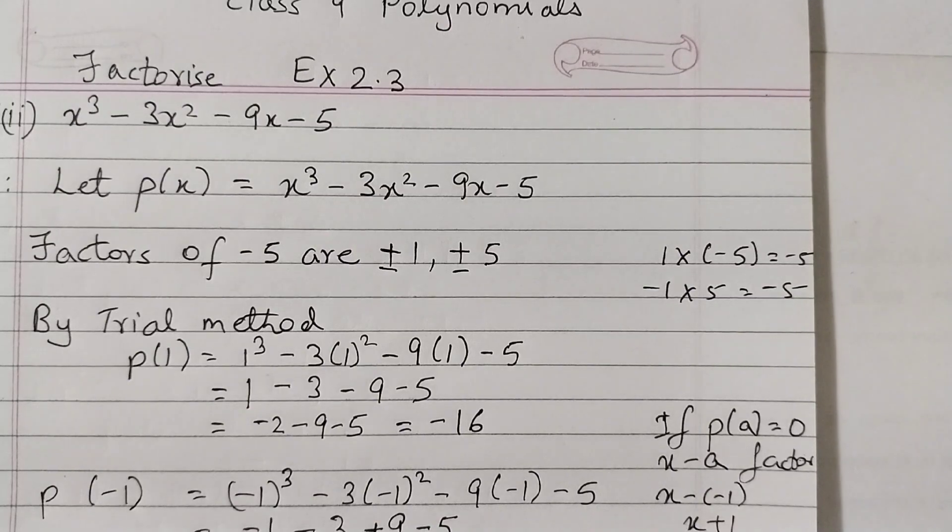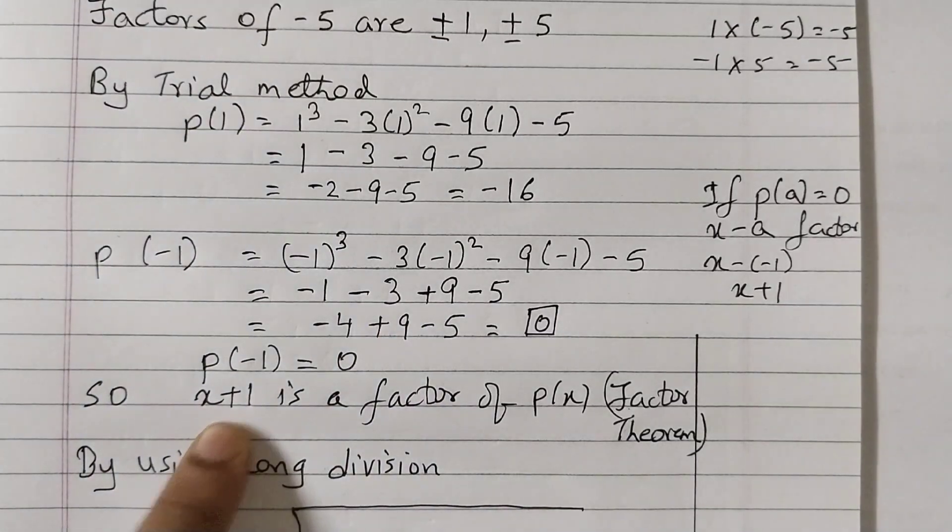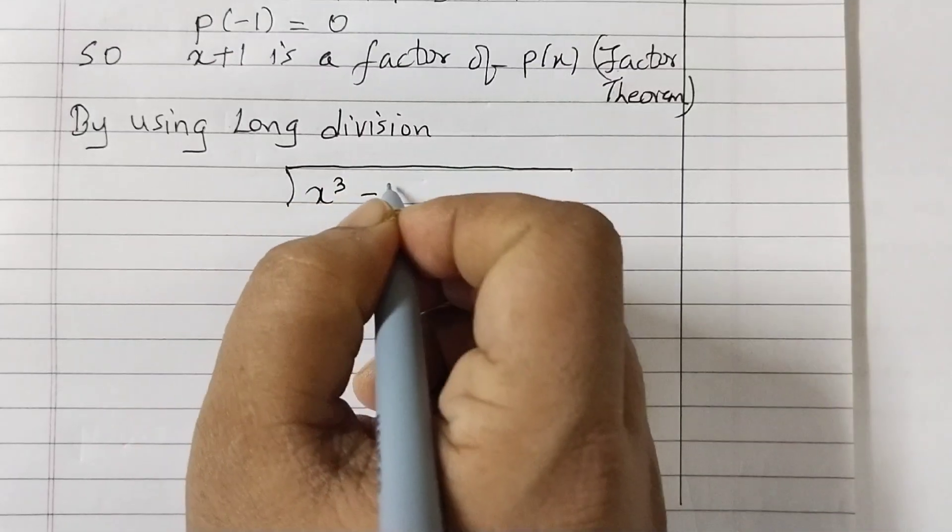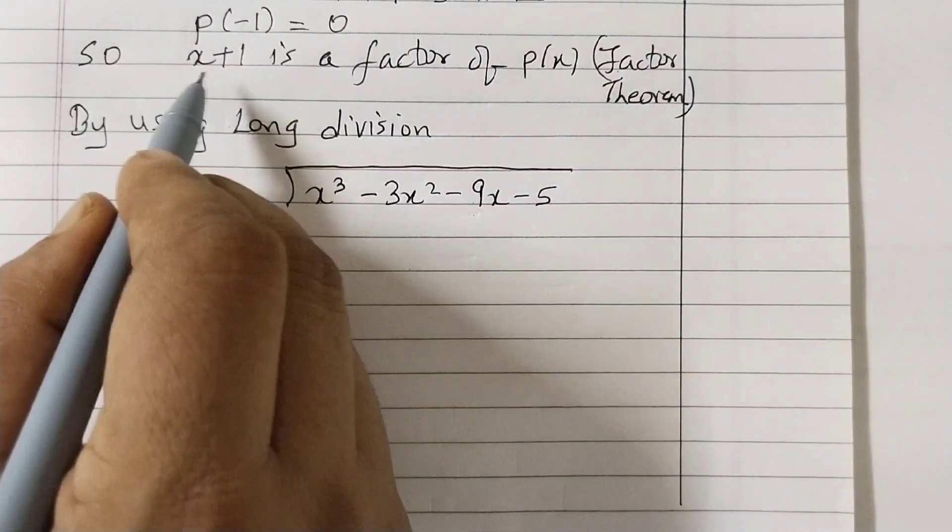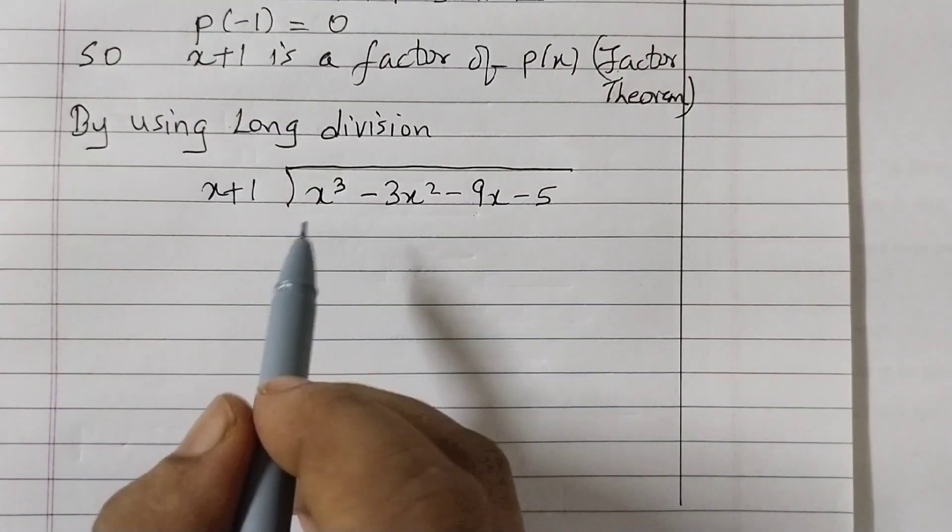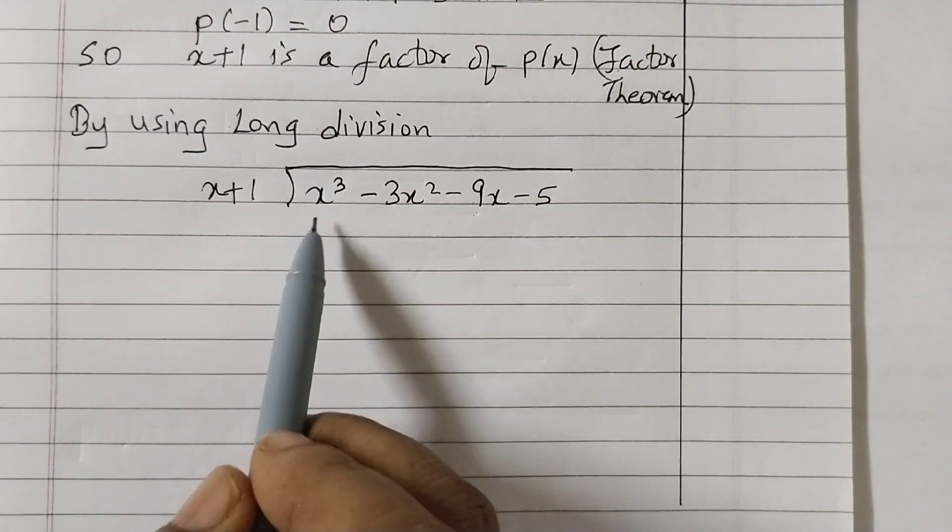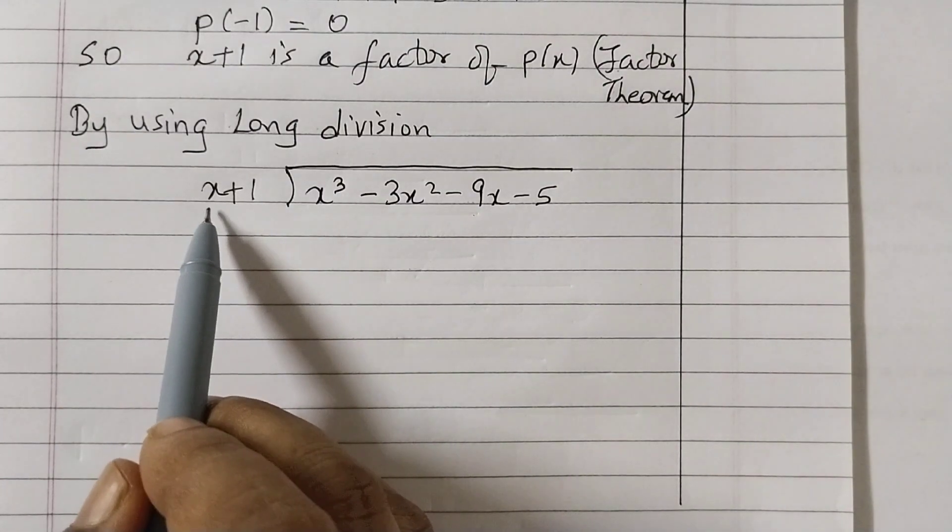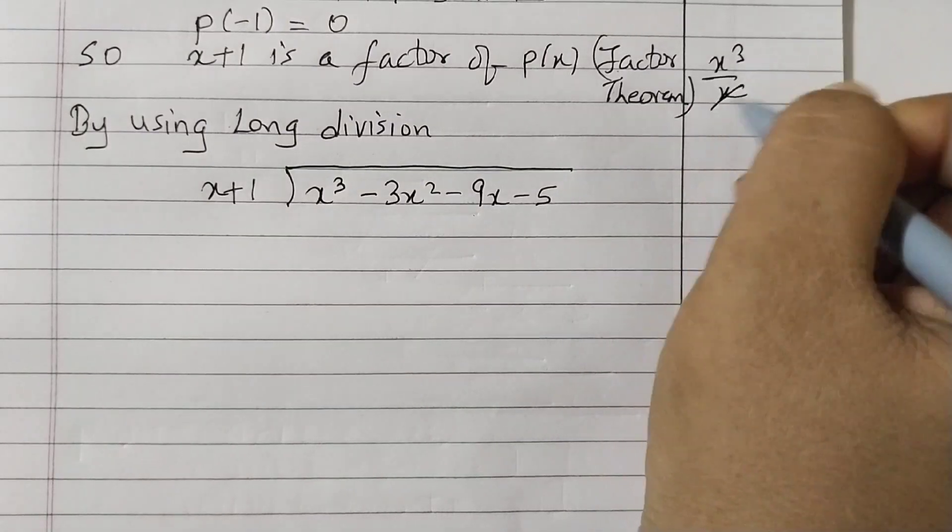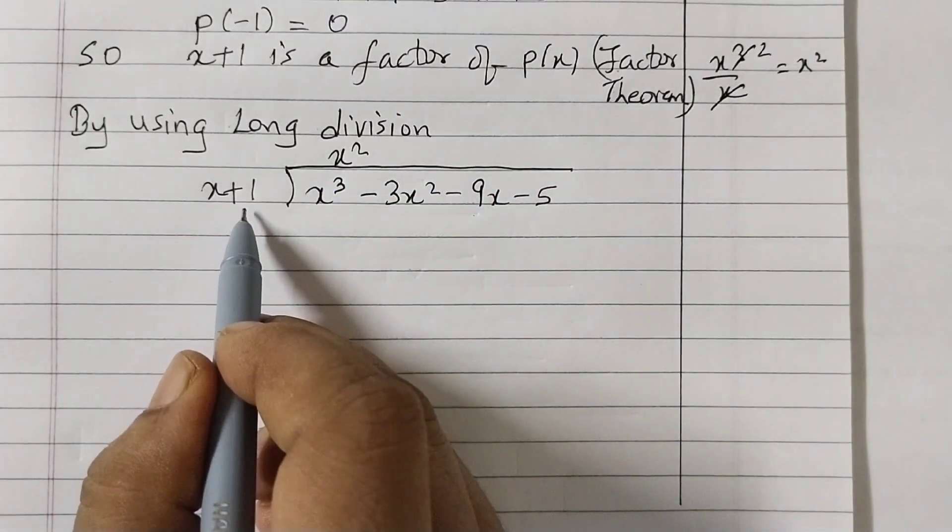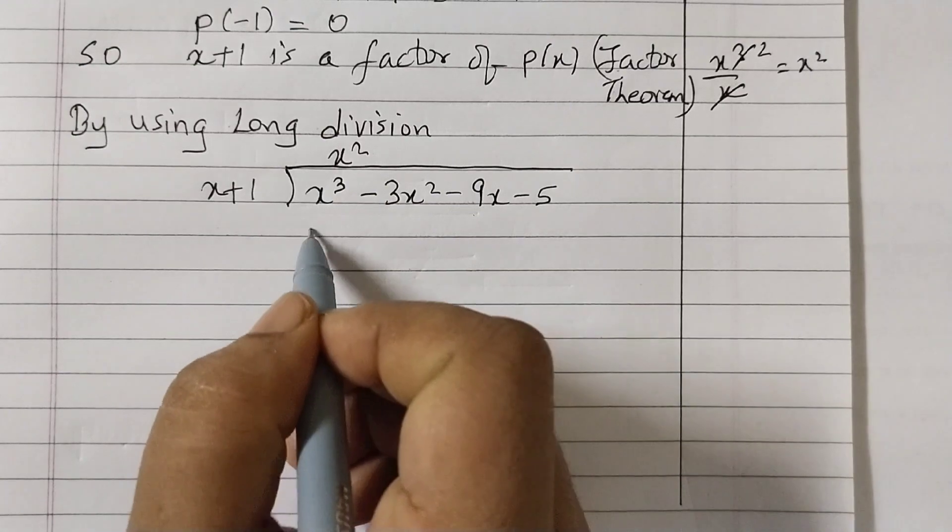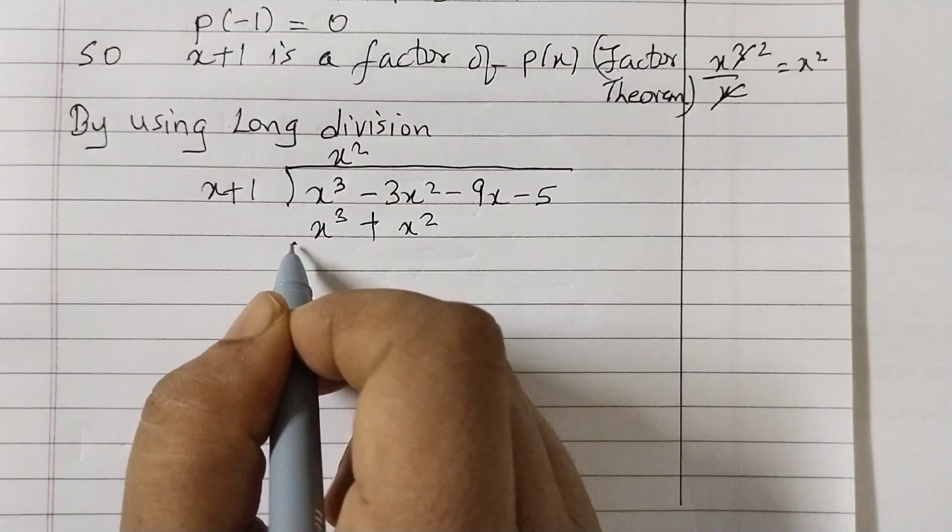To find the other factors we will use long division. For long division this is our dividend and x plus 1 is the divisor. x cubed minus 3x squared minus 9x minus 5 dividend is inside, divisor x plus 1 is outside. To find the first term of the quotient divide the first term of the dividend by the first term of the divisor.